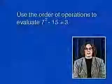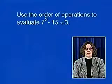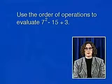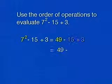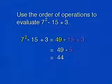Let's work through an example. You notice seven squared, so perform that operation first to get 49 minus 15 divided by 3. Then perform the division to get 49 minus 5. Then the subtraction gives us 44.